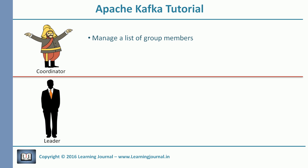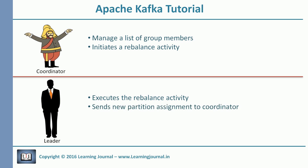On the event of a membership change, the coordinator realizes that it is time to rebalance the partition assignment — because you may have new members who need partitions assigned, or a member left and you need to reassign its partitions to someone else. So every time the list is modified, the coordinator initiates a rebalance activity. The leader is responsible for executing the rebalance activity. The leader takes a list of current members, assigns partitions to them, and sends it back to the coordinator. The coordinator then communicates back to the members about their new partitions.